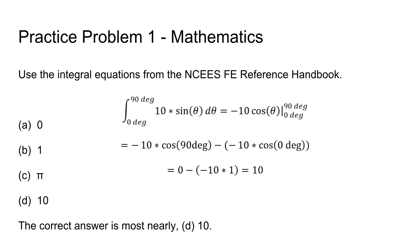So our function becomes negative 10 cosine theta, and you have to evaluate it from 90 degrees to 0 degrees. You find out cosine of 90 is 0 and cosine of 0 is 1.